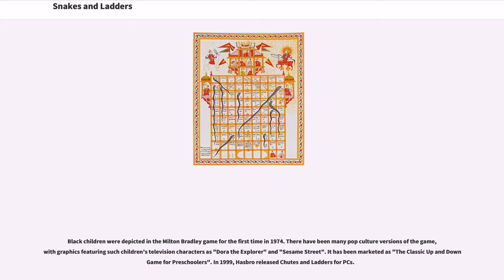There have been many pop culture versions of the game, with graphics featuring such children's television characters as Dora the Explorer and Sesame Street. It has been marketed as the classic up and down game for preschoolers. In 1999, Hasbro released Chutes and Ladders for PCs.